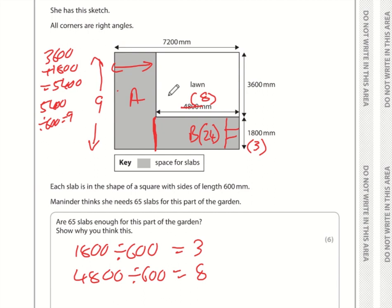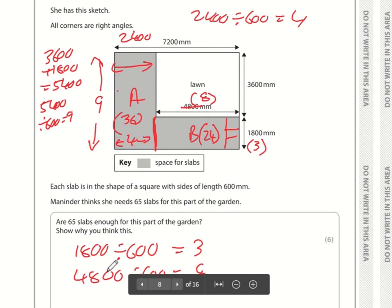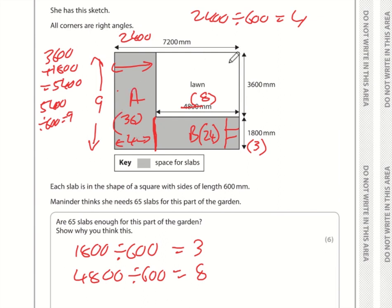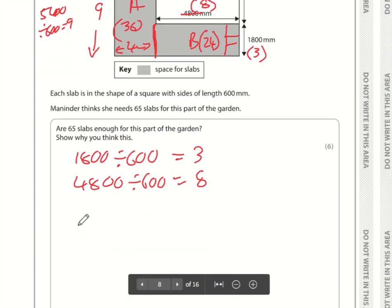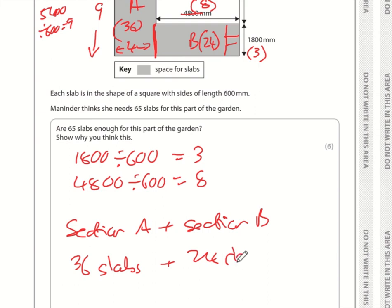The remaining dimension for section A is 7,200 minus 4,800 equals 2,400; 2,400 divided by 600 is 4 slabs. So section A is 4 times 9 equals 36 slabs. Total slabs: section A plus section B is 36 plus 24 equals 60 slabs. Meninder thinks she needs 65 — she's wrong, she only needs 60. But are 65 enough? Yes, with 5 left over.